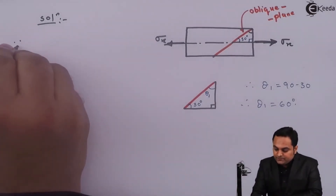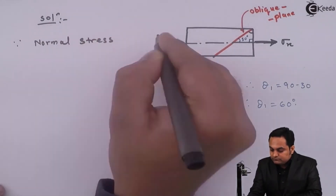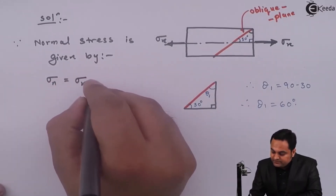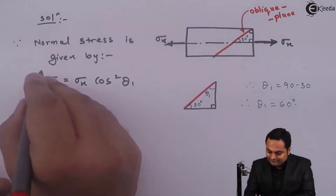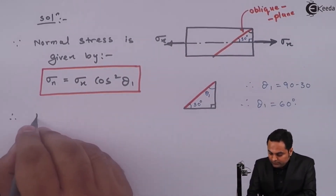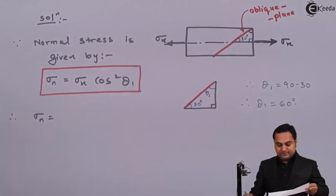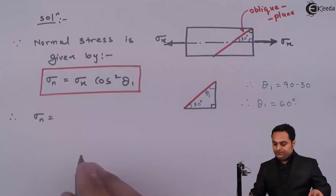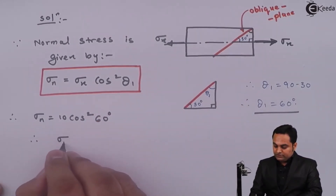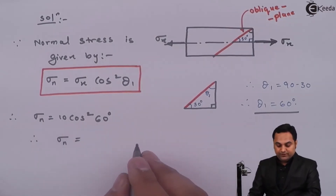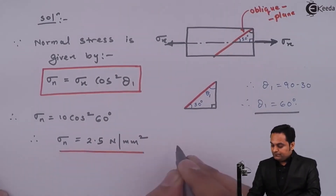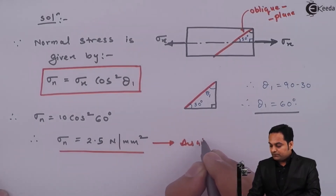After getting theta 1, we can directly use the formula of normal stress. Normal stress is given by Sigma n = Sigma X × cos² theta 1. Putting in the values: Sigma X is 10 Newton per mm square, and cos² of 60 degrees gives us Sigma n = 2.5 Newton per mm square. This is the first answer.